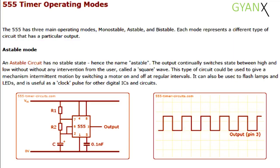Astable mode: an astable circuit has no stable state, hence the name astable. The output continually switches state between high and low without any intervention from the user, called a square wave.